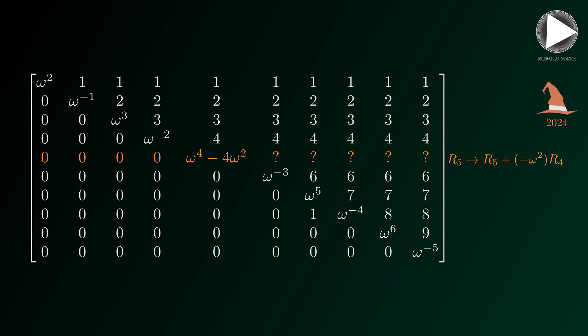Thus, the element in the diagonal in the fifth row is therefore omega to the fourth minus four times omega-squared.